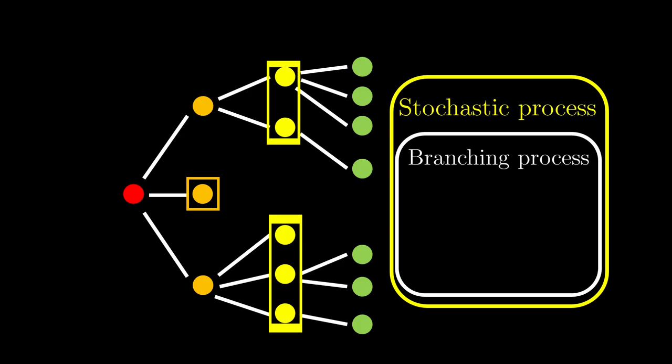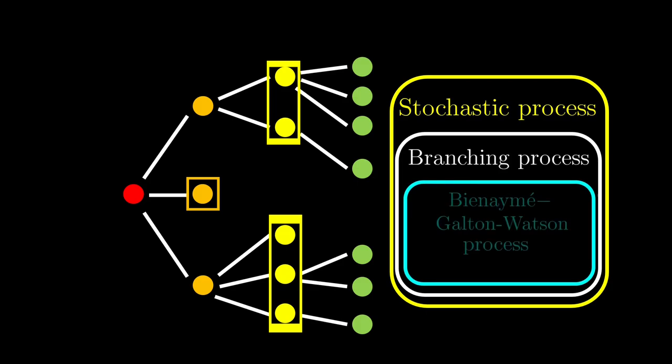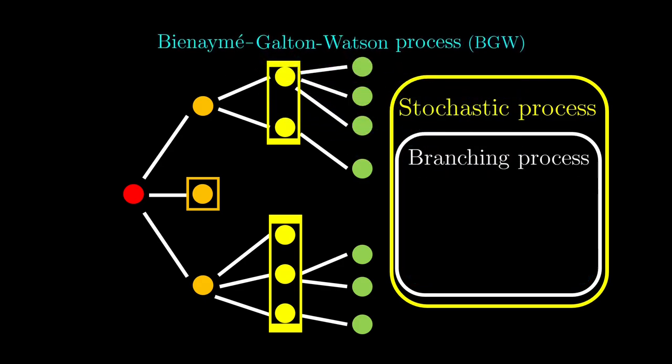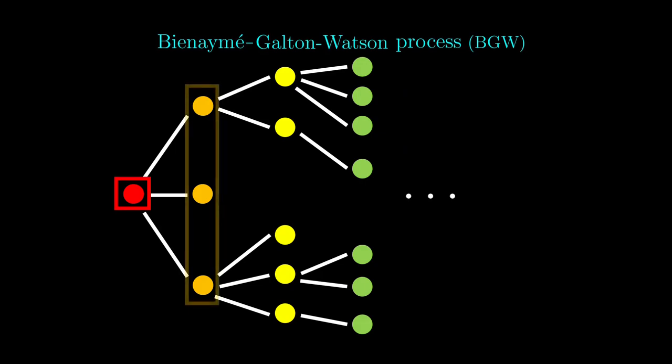This video will focus on the simplest type of branching process known as the Bienaymé-Galton-Watson process, BGW for short. So what does this BGW say about the spread of coronavirus? Before we move on, we need to introduce a few terminologies.